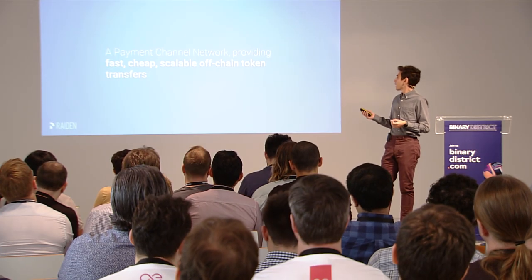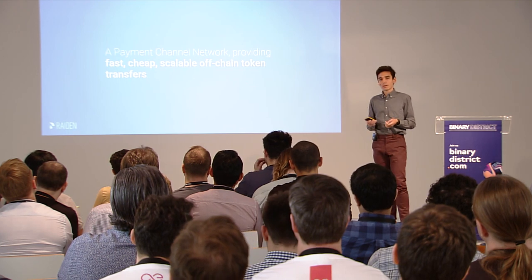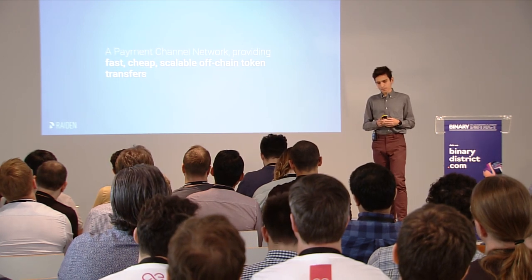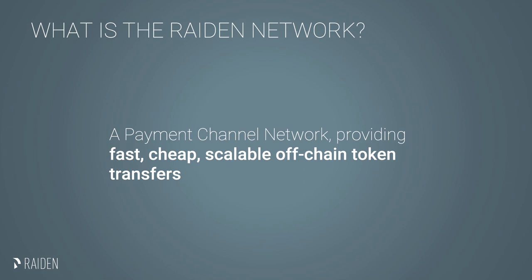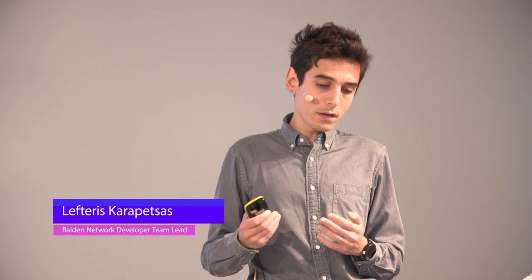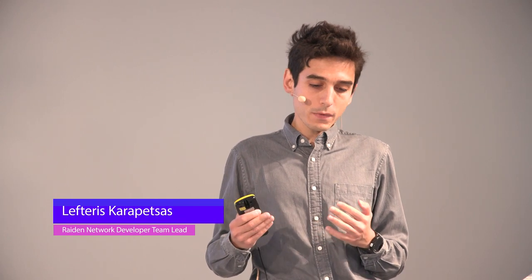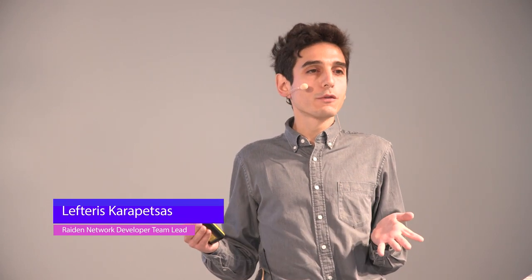We allow fast, cheap, and scalable off-chain token transfers. Main differences between Lightning and Raiden: we can transact with any ERC-20 token, whereas Lightning uses only the Bitcoin token. And we use smart contracts for representing channels, while Bitcoin has a completely different model around UTXOs.